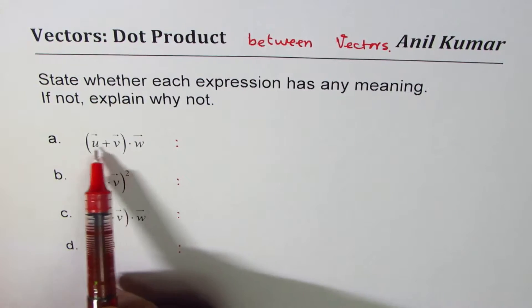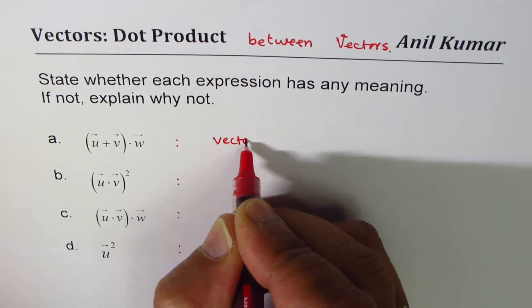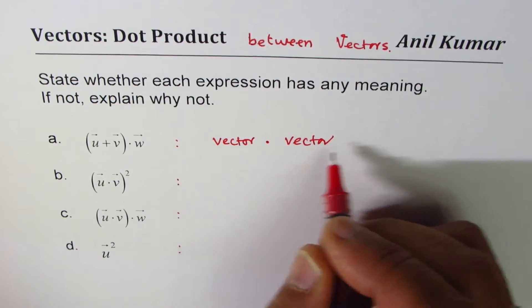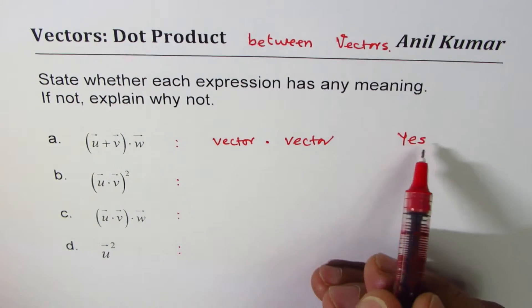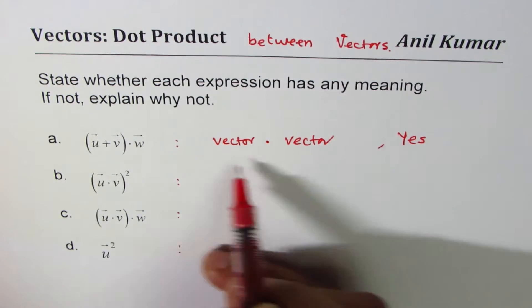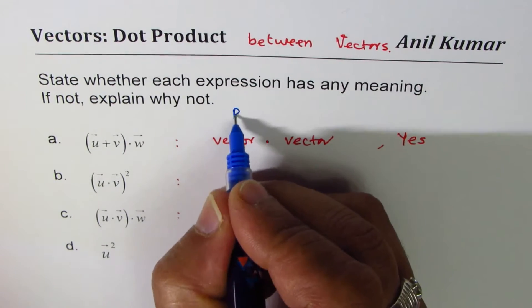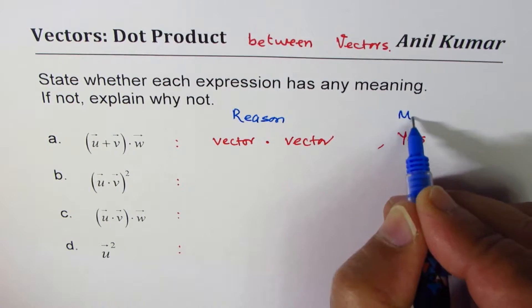State whether each expression has any meaning. Let's begin with the first one. When you add two vectors, you get a vector, right? So it is vector dot vector. Both are vectors, and so we say yes, it has meaning. So I'm writing the meaning part later. First, I'm reasoning it out, so I'm writing reasons first.